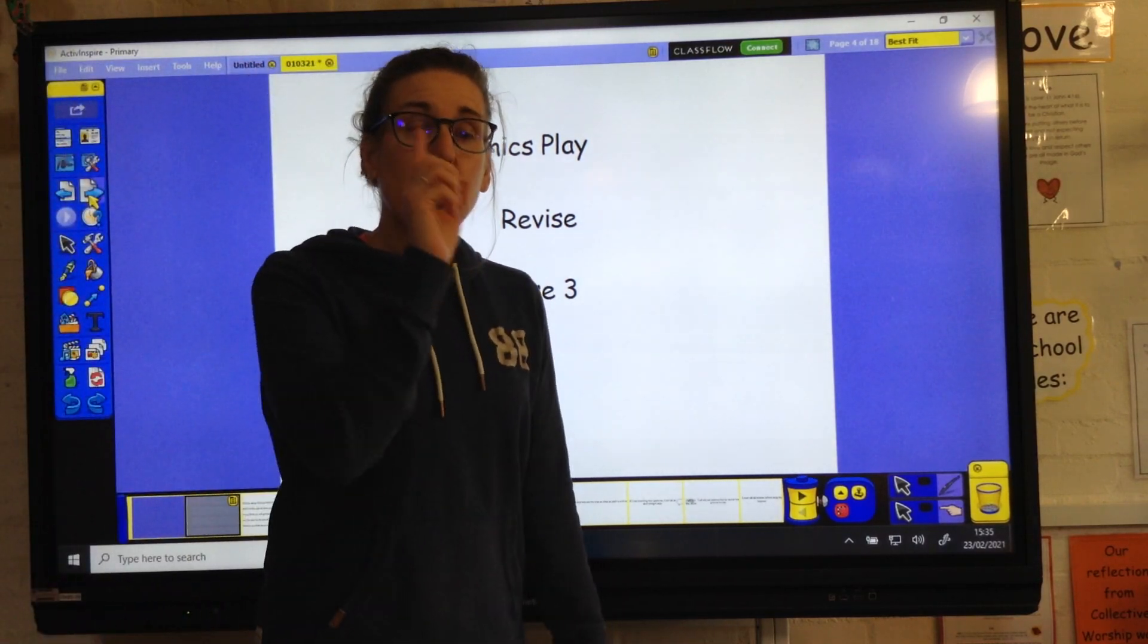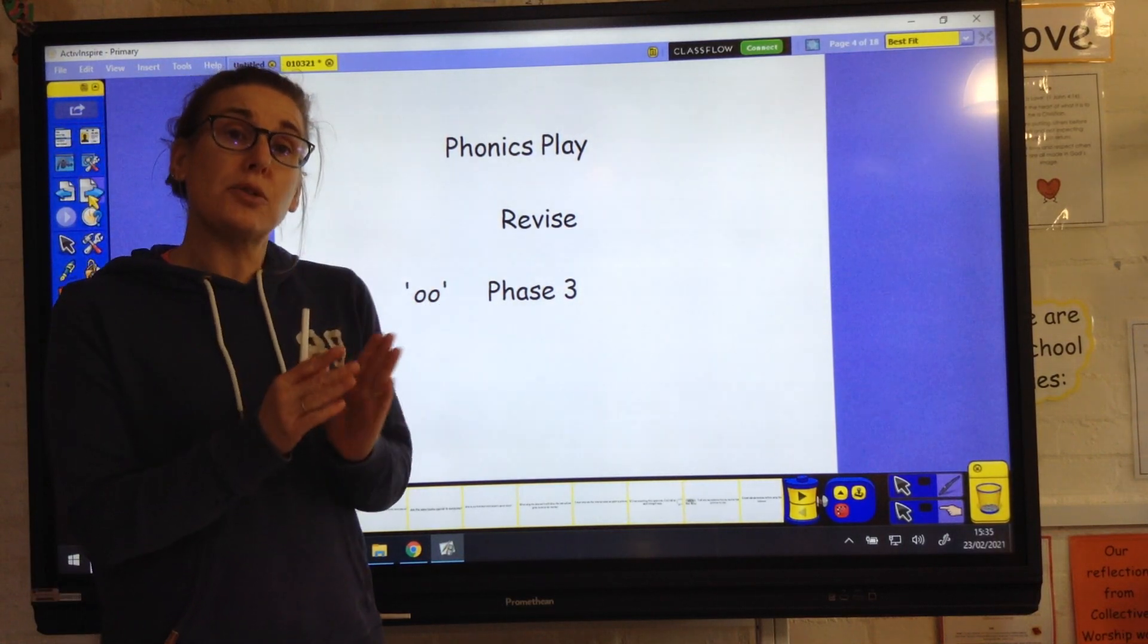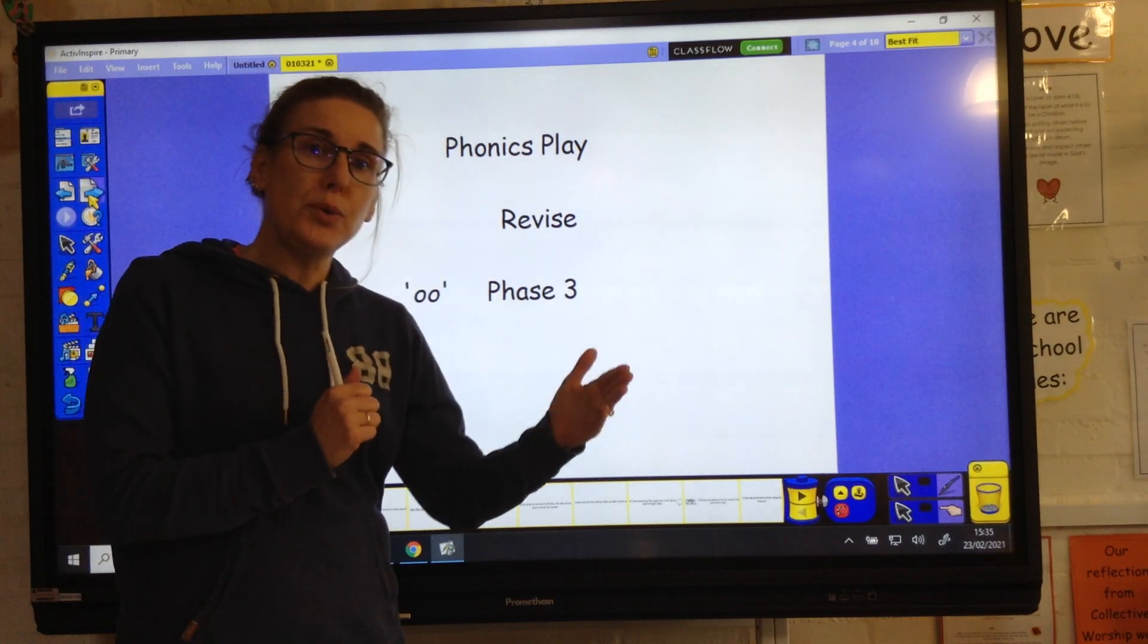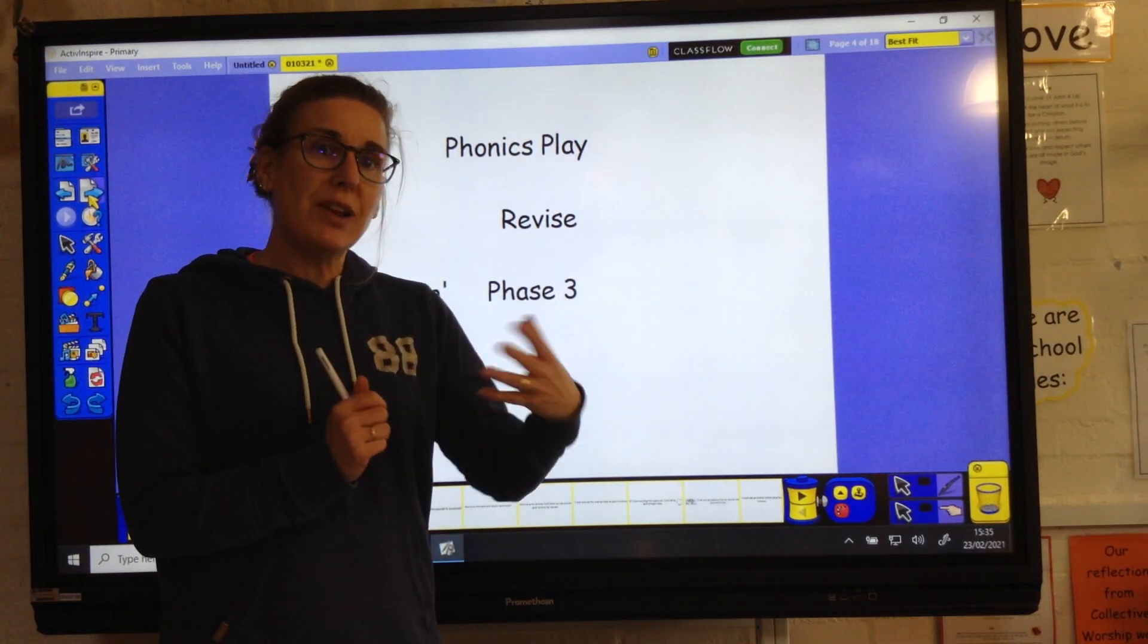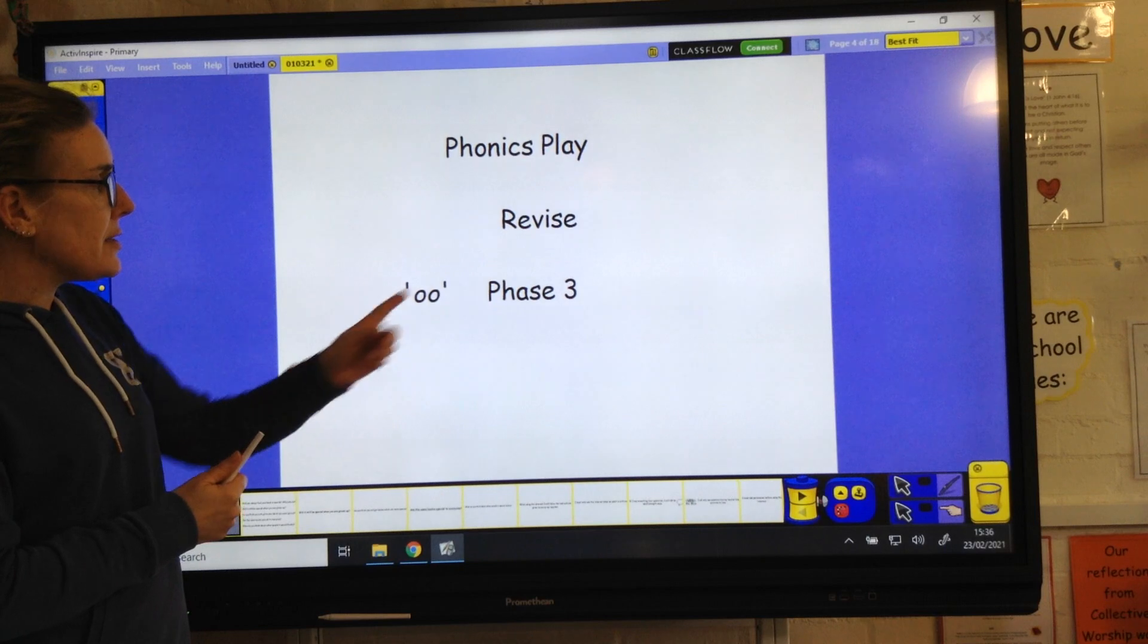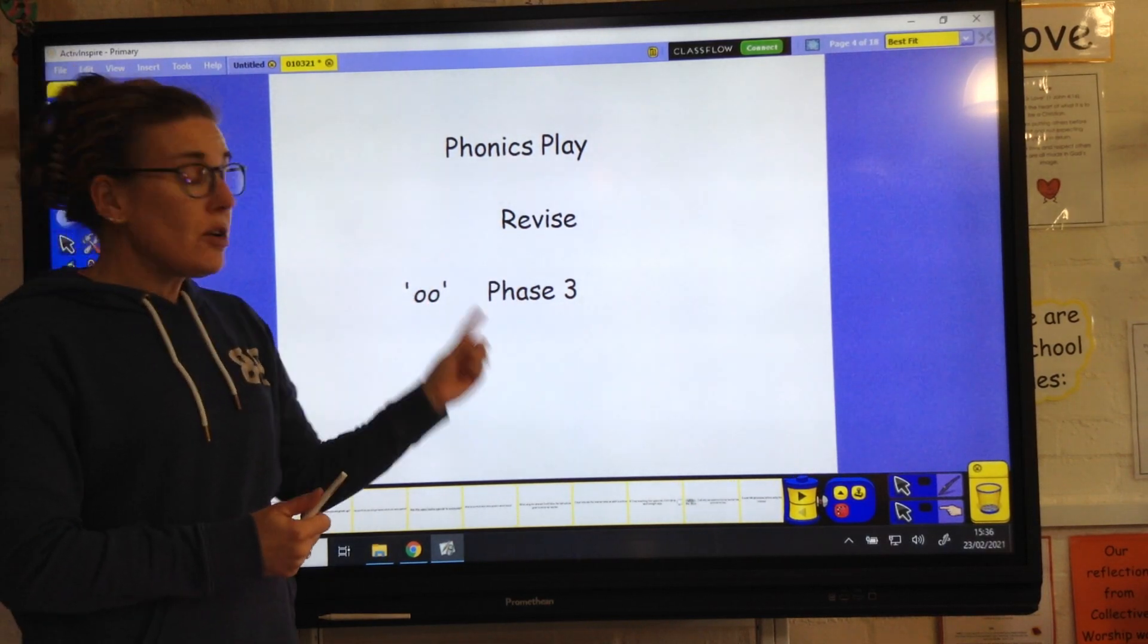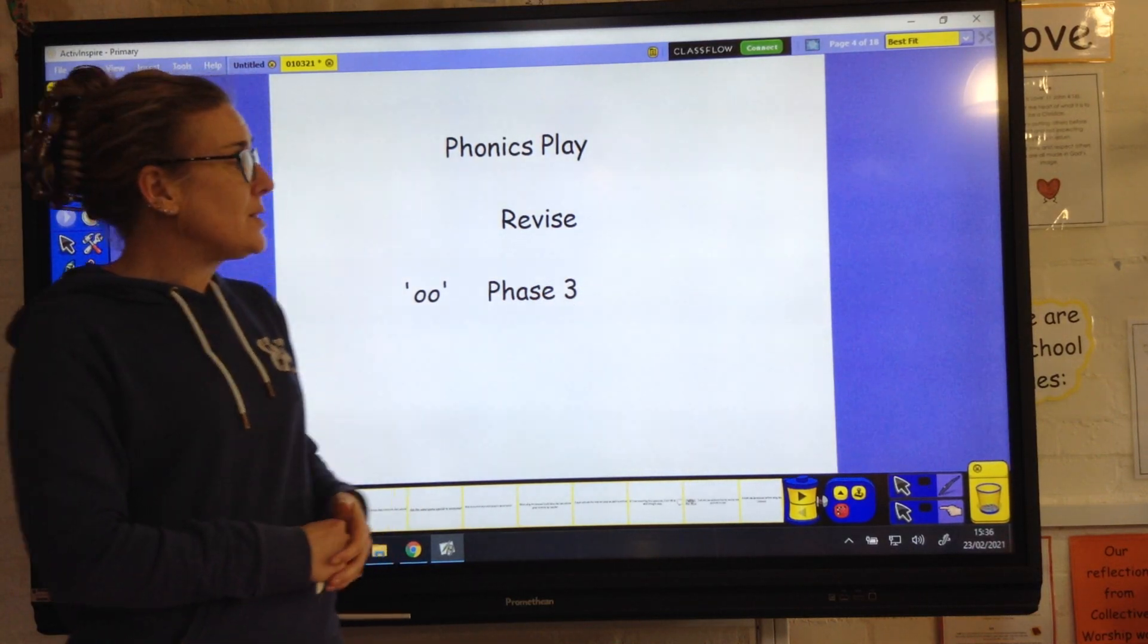This week we are thinking about the long U sound. With the double O, it can make a short sound like in book or look. We're looking at the long O sound like in moon and spoon, which is related and linked to the long U sound. The long U, spelled with the double O's, is on phase three on Phonics Play.